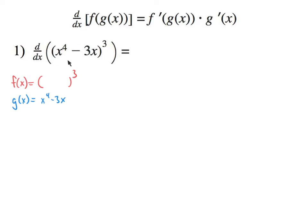So again, f is the outside and g is the inside. The formula says: take the derivative of the outside and leave the inside, then take the derivative of the inside. We're going to take the derivative of this red piece. Now, 'blank' is just like an x or a y — just leave it blank. So the derivative of the red piece is going to be 3 blank squared.